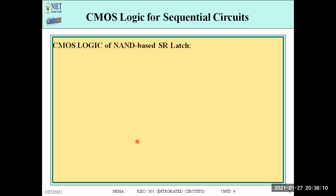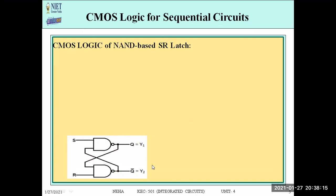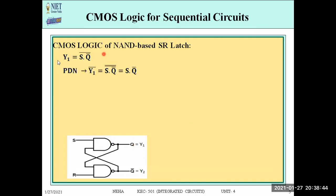Let us see the CMOS logic design of the NAND-based SR latch step by step. For Y1: Y1 = S·Q̄ bar. The inputs of NAND gate 1 are S and Q-bar, so Y1 = S·Q̄ bar. For the pull-down network (PDN), we complement Y1 to get S·Q̄, so S and Q-bar are in series for PDN. For the pull-up network (PUN), we take the dual of PDN, giving S + Q̄ — S and Q-bar in parallel.